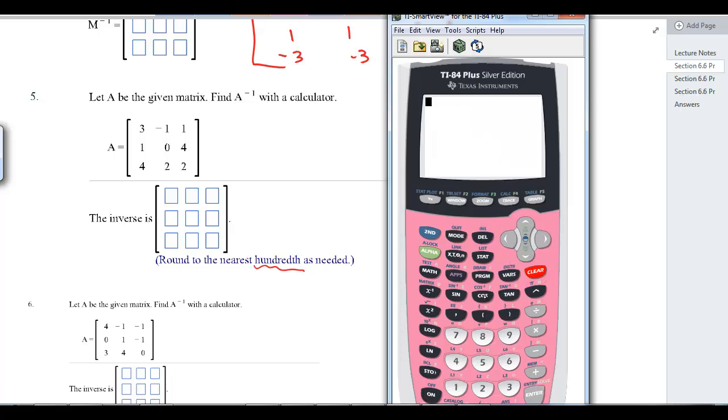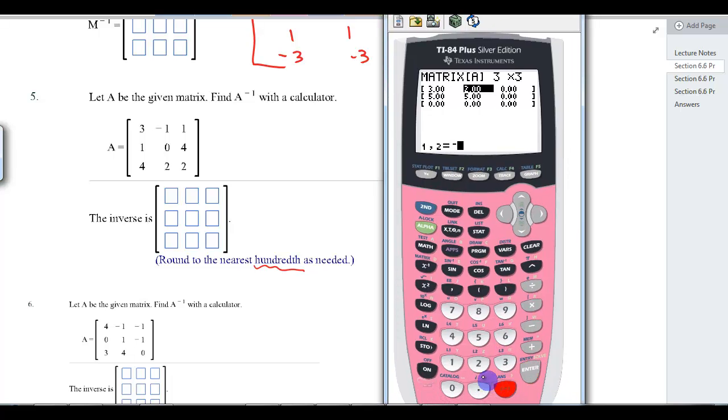I'm going to do the first one with you. So we're going to go back into second matrix. Over to edit. Enter. And we're going to do a 3 by 3. And we're going to put in, what are we on? 3. Negative 1, 1, 1, 0, 4, and then 4, 2, 2. So I've got everything in. Second, quit. Second, matrix, A, inverse, enter. And these are the answers you get. And you can see that they're already rounded to the hundredths.